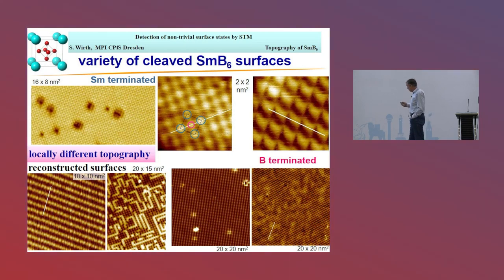What could be a little bit larger are actually these reconstructed surfaces here. In this case, each second row of samariums is taken away, so you end up with a 2x1 reconstructed surface. They can be a little bit larger, up to a micron or so, but they don't need to be straight lines. They can also meander around, but it takes care of the polar surface issue.